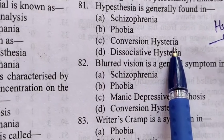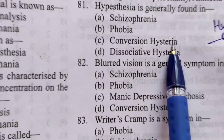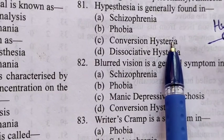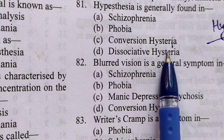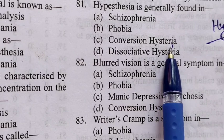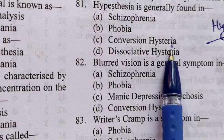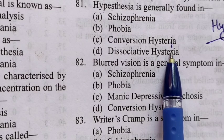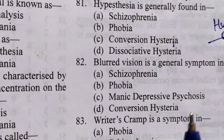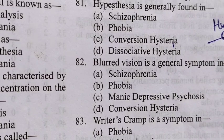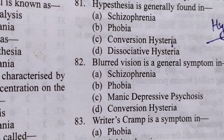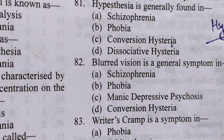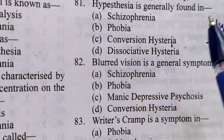Conversion hysteria mein aapke sense karne ka — feel karne waala, touch karne waala, dekhna — jo five sensory indriyan hoti hain jo aapko sense karati hain — woh theek se kaam nahi karti. Motor dysfunction ho jaata hai, motor activities mein problem aati hai — haath move karne mein, likhne mein problem aane lagti hai, aur thoughts se related problem aati hai. Yahi conversion hysteria hai. Toh jab numbness ki baat kare, hypoesthesia ki baat kare, toh yeh sensory disorder hai — related to conversion hysteria.